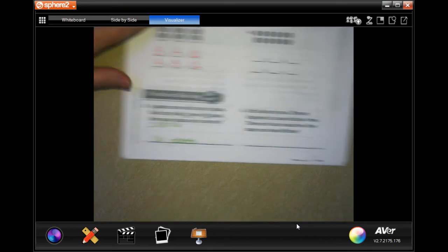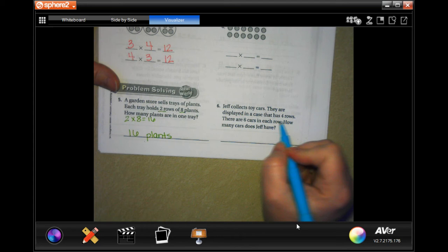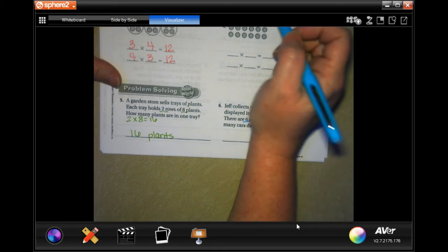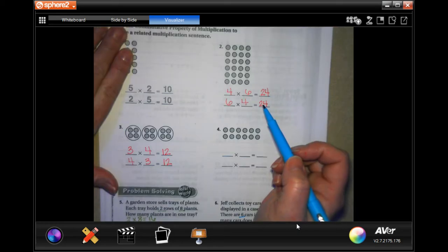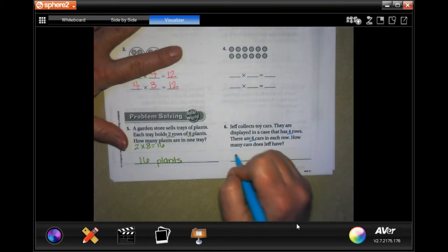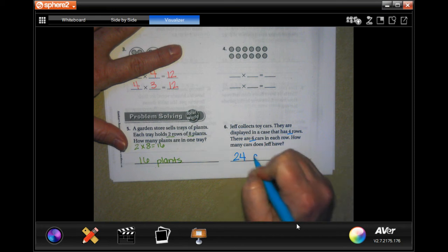Next one. Jeff collects toy cars. They're displayed in a case that has 4 rows. That's 6 cars in each row. How many cars do we have? Well, 6 times 4, we just did up here. So, 24. 24 cars.